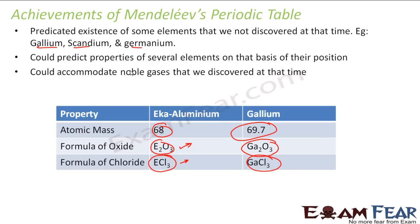He could also accommodate noble gases, because these gases were discovered only after he had completed the table. Once noble gases were discovered, his table was able to accommodate them — that was one good thing about his table.